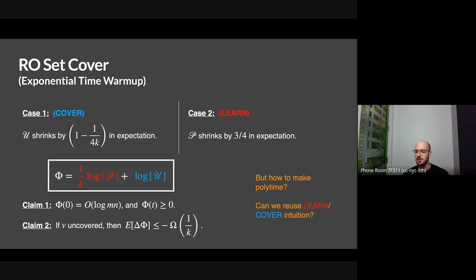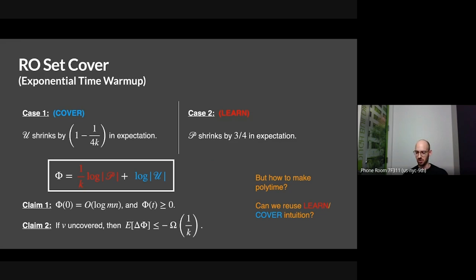That was an exponential-time algorithm — we had to enumerate all possible solutions. The next obvious question is how to make this polynomial-time. Is there a way to reuse the learn-or-cover intuition? Why did we need exponential time? It was to enumerate this portfolio and generate a distribution over sets. Maybe we should just directly maintain a distribution instead of going through the enumeration.